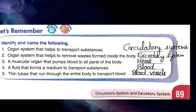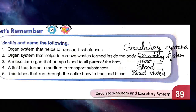Next is: a muscular organ that pumps blood to all parts of the body. कौन सा ऐसा muscular organ है जो blood को pump करता है — means blood छोड़ता है पूरी body में — तो correct answer is heart (H-E-A-R-T).